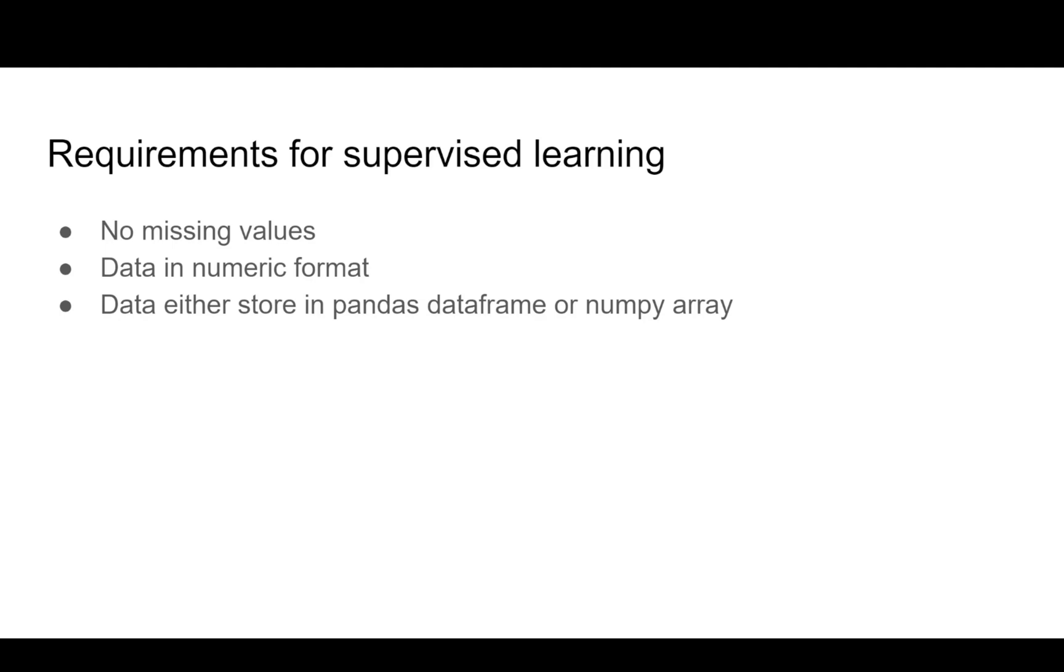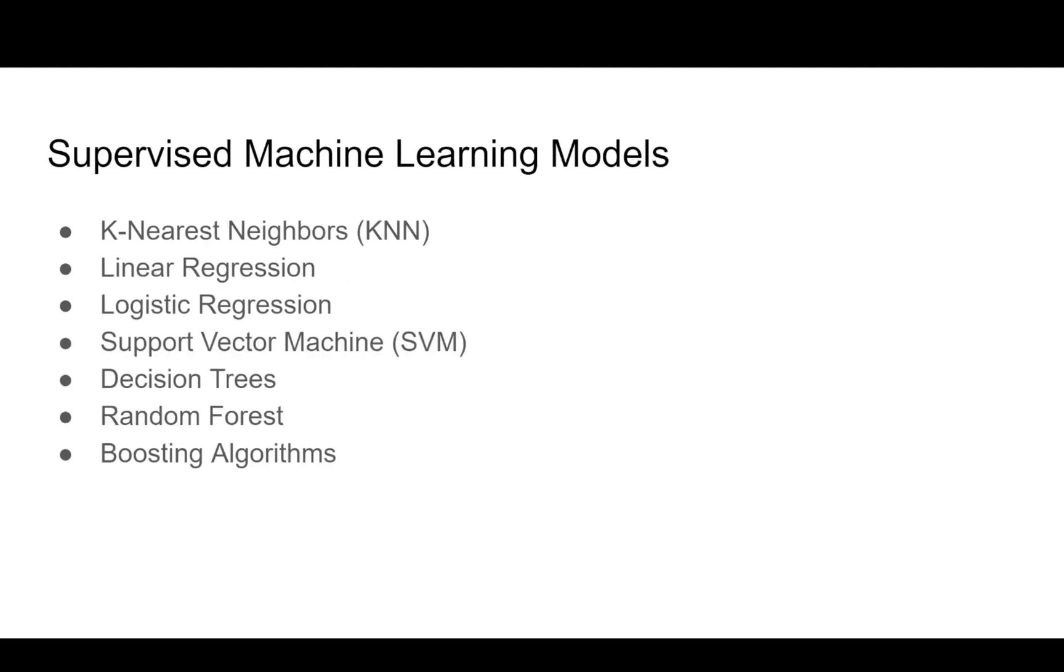For training supervised learning, there are several machine learning models. I list out seven most popular machine learning models here: K nearest neighbor, linear regression, logistic regression, support vector machine, decision tree, random forest, and boosting algorithm. There are lots of other models as well, but the most popular models are these. In this playlist, I'm going to discuss each model and talk about how to train the model and how to predict values.